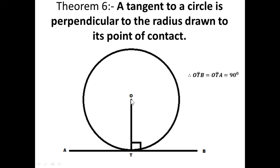The theorem says that if a line is drawn from the center of the circle to the point where the tangent touches, that radius is perpendicular to the tangent. The angle between the radius and the tangent is 90 degrees. You can see that the radius is touching tangent AB at point T, and both angle OTB and angle OTA are 90 degrees.